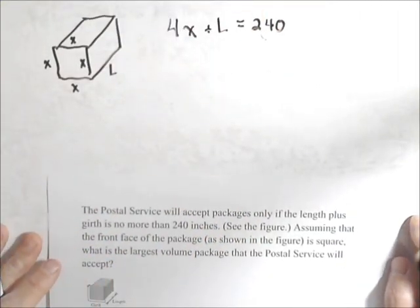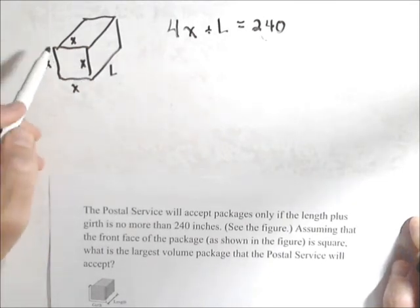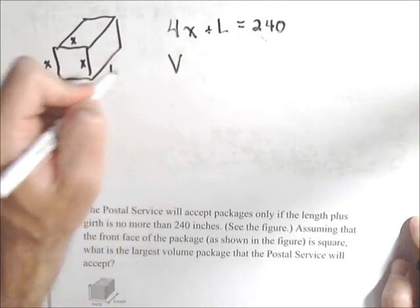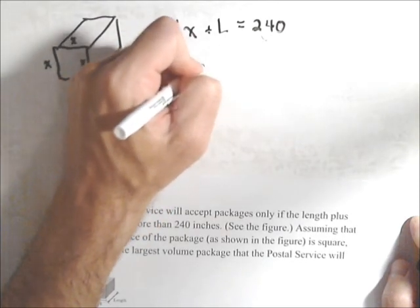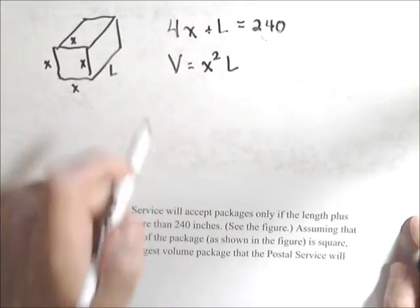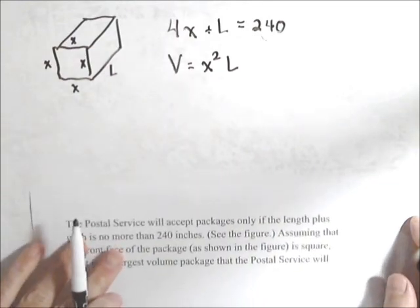Now, what is it we want to do? We want to maximize volume. So we need the volume of this thing. Well, the volume is the area of the base times the height. So volume is going to be x times x, so x squared times L. And here's what we want to maximize, subject to that constraint.